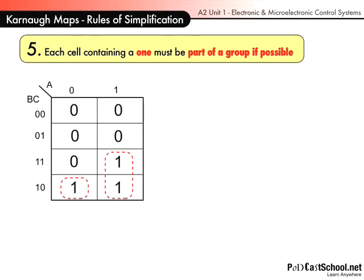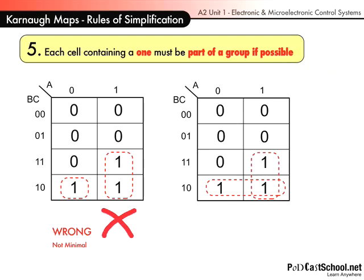Rule five: each cell containing a one must be part of a group if possible. So really, that's not the way to do it, but that is. Can you see the difference?